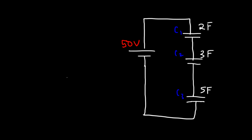What is the equivalent capacitance in this circuit? That's the first thing you want to look for. A simple way to find the equivalent capacitance in a series circuit is 1 over C1 plus 1 over C2 plus 1 over C3, all raised to the minus 1.